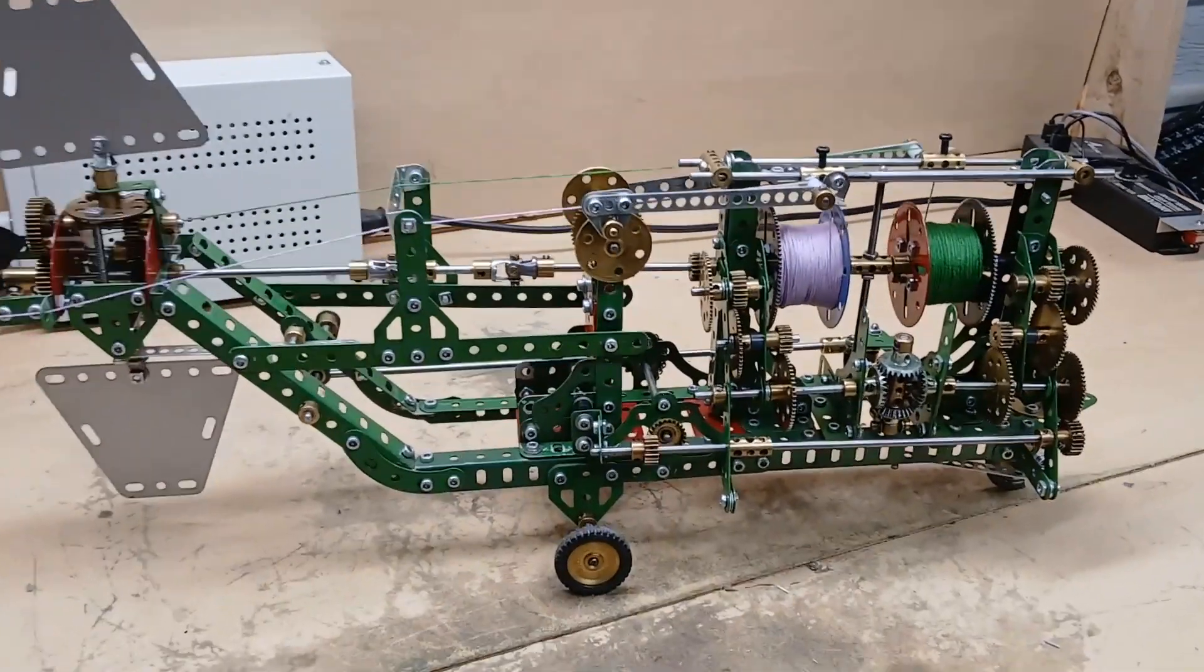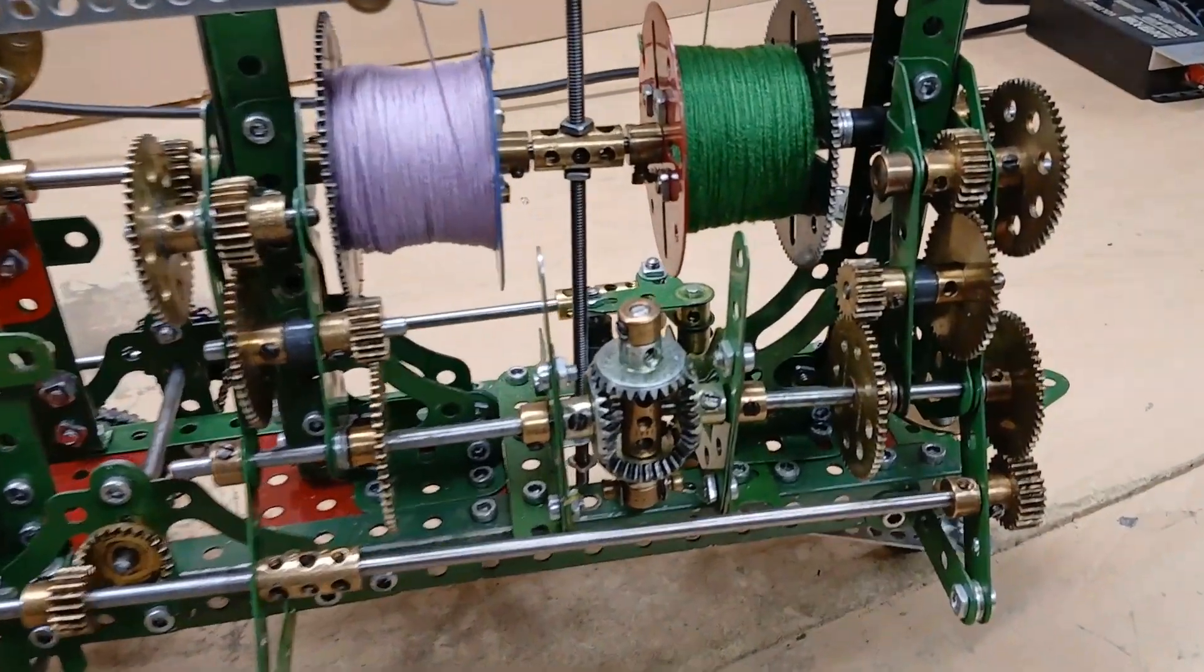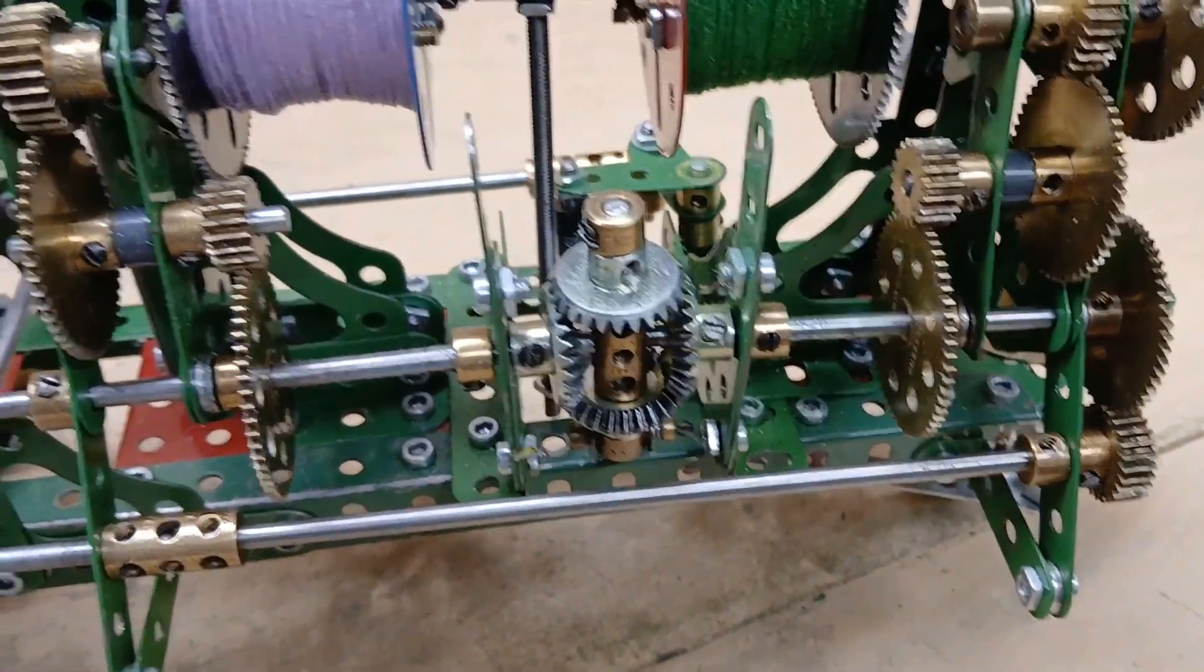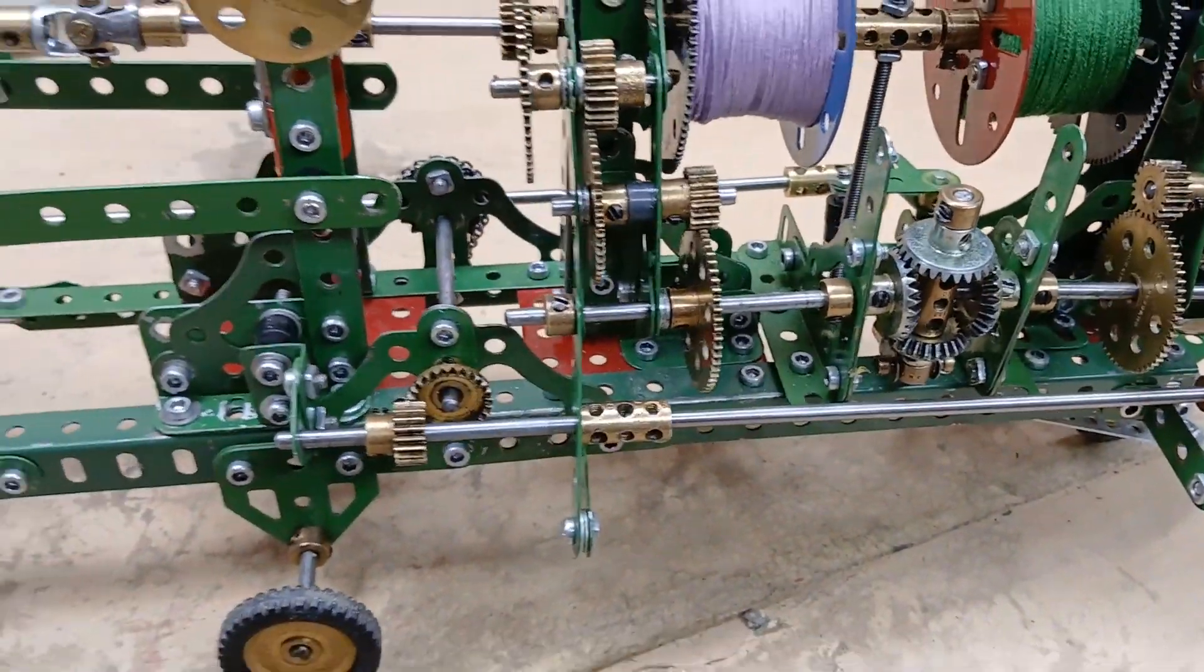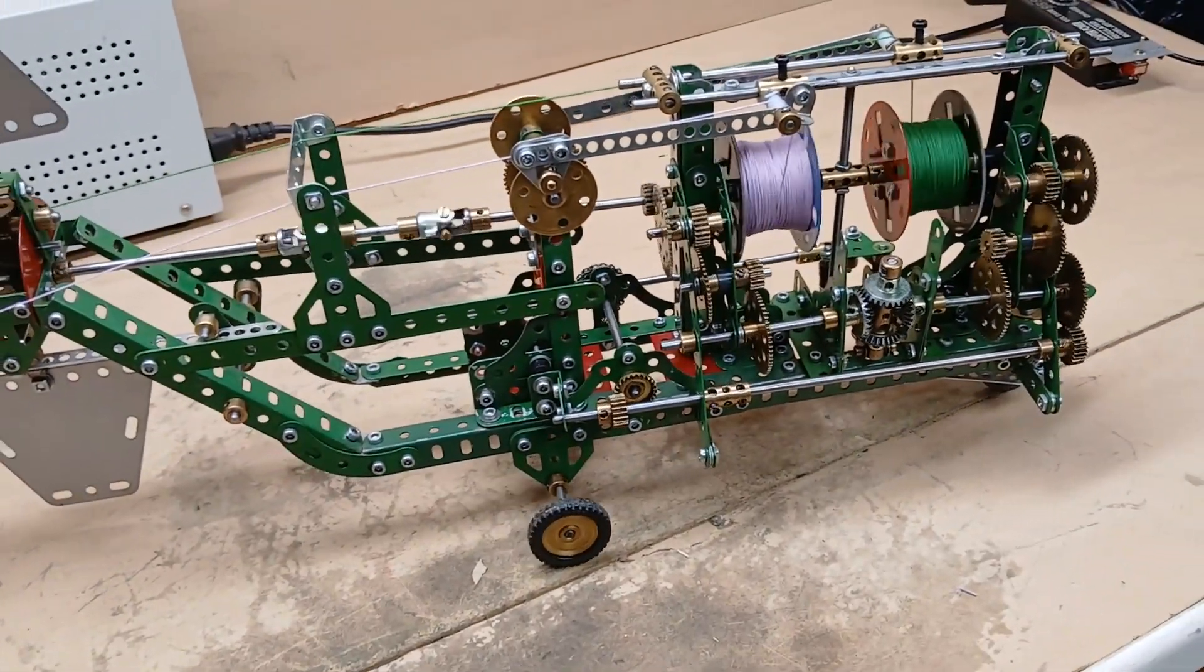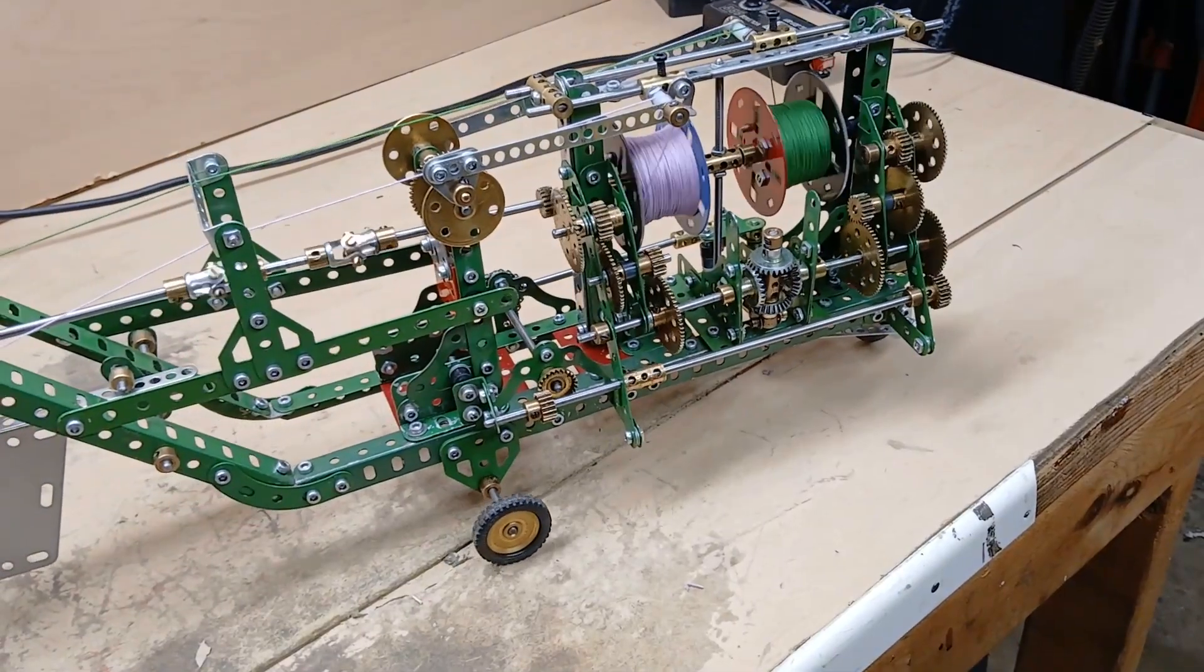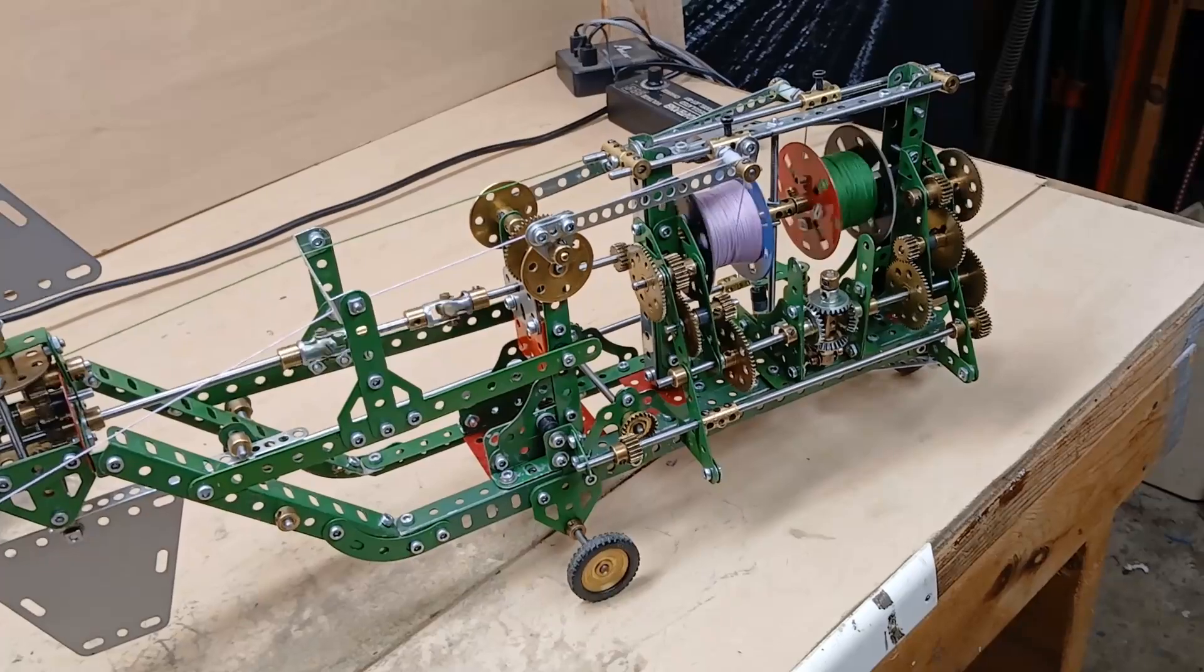I managed to get a little more speed out of the torpedo by changing these gears. Before, these were a one-to-one ratio. Now they're a one-to-two, which is doubling the speed of the drive to the wheels. I know there's not much to see, but it is actually going faster than it did before.